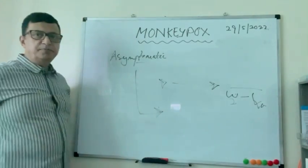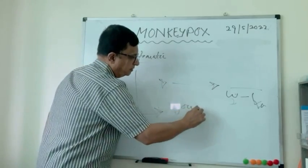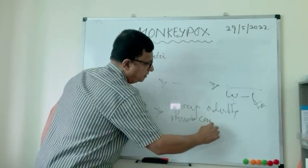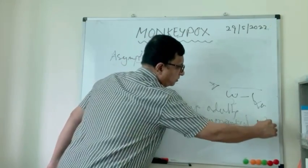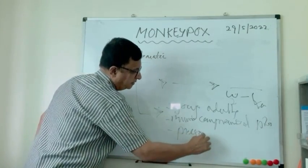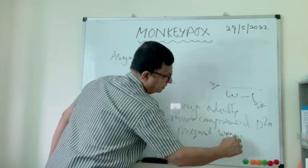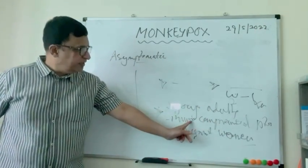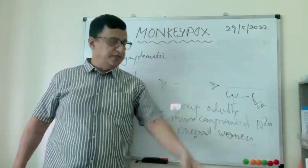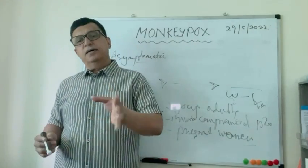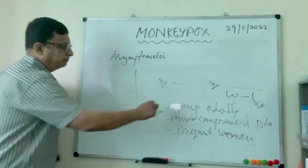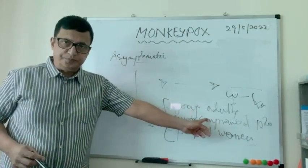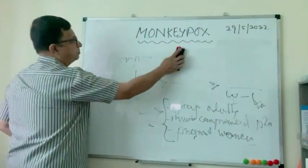The most vulnerable people are young adults and immunocompromised patients, who can develop deadly disease. Pregnant women are also more vulnerable and can face the risk of stillbirth. If someone in these categories is exposed to monkeypox, we have to be very careful in management.